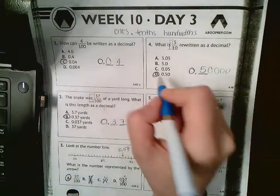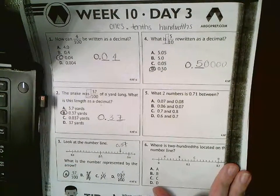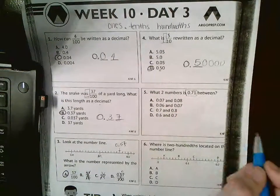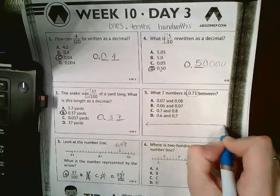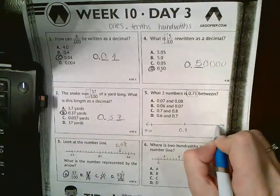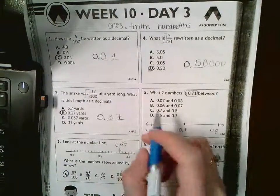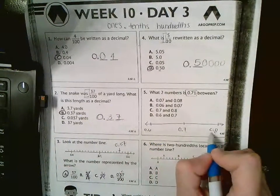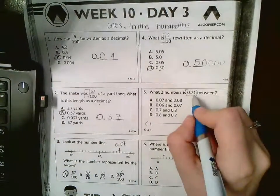Number 5: What 2 numbers is 0.71 between? Just like we did for number 3, I'm gonna make a number line, and I have 0.6, 0.7, 0.8. Between here, these would all have 6 something—61, 62, 63—so that doesn't work. In between here, I would have 71, 72, 73 hundredths, and that's where that one would go.